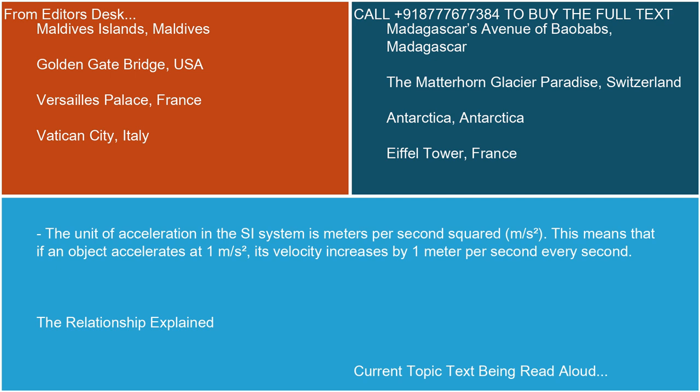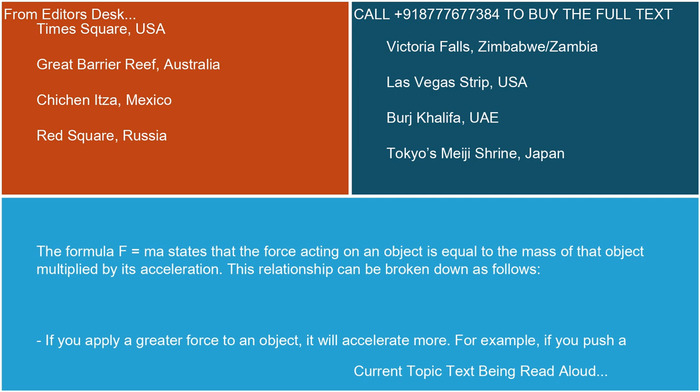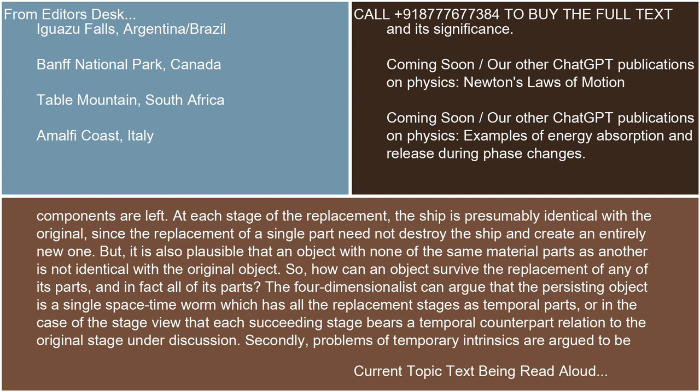The relationship explained. The formula F equals ma states that the force acting on an object is equal to the mass of that object multiplied by its acceleration. If you apply a greater force to an object, it will accelerate more. For example, if you push a shopping cart, the harder you push — greater force — the faster it will move — greater acceleration. If the mass of the object increases, the same amount of force will result in less acceleration. For instance, if you try to push a heavy car with the same force you use to push the shopping cart, the car will not accelerate as much because it has a much larger mass.